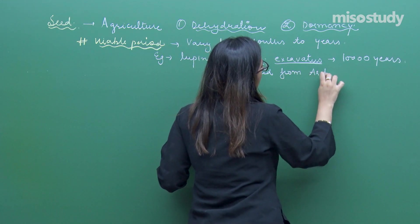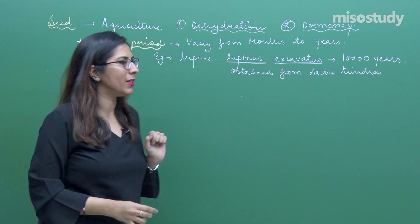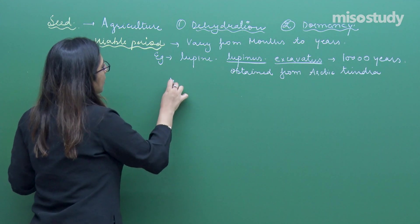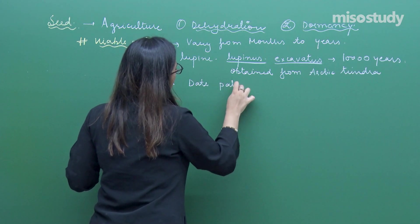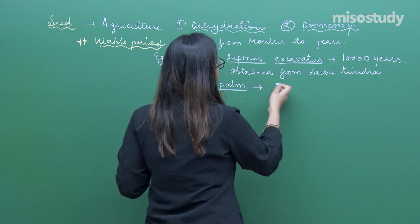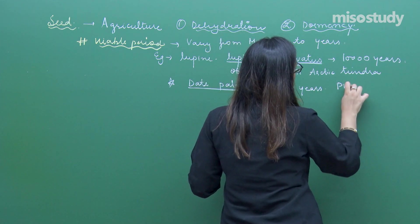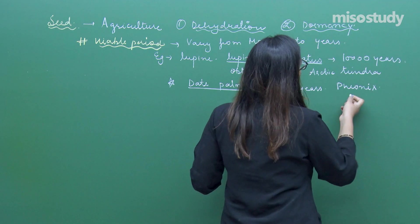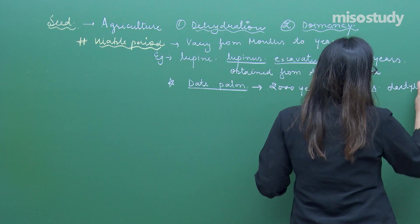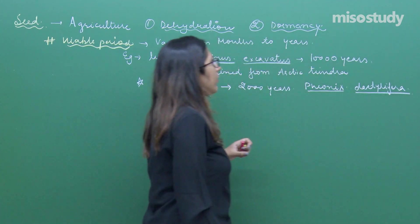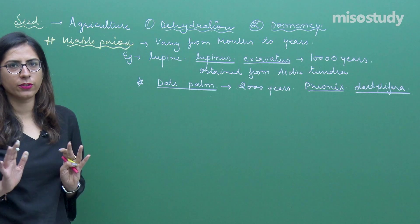Likewise we have one more example, that is date palm. Date palm seeds can easily survive for around 2,000 years. The name is Phoenix dactylifera. These are certain important conditions for seeds. With this we have completed seeds.